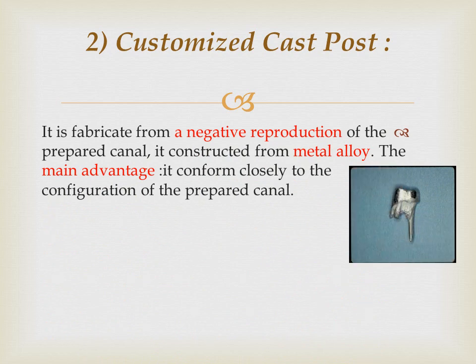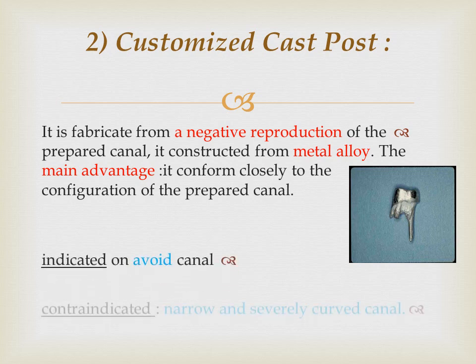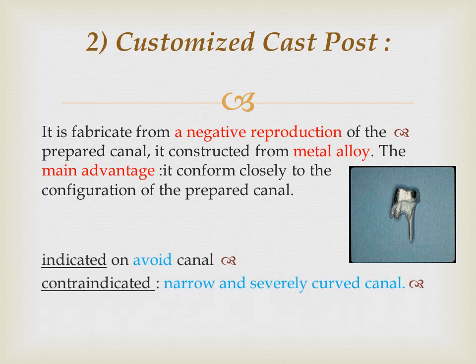The second type is the cast post, in which a negative reproduction of the prepared canal must be made. The main advantage of this type is that it conforms closely to the configuration of the prepared canal. It is indicated for oval canals but contraindicated in narrow and severely curved canals.